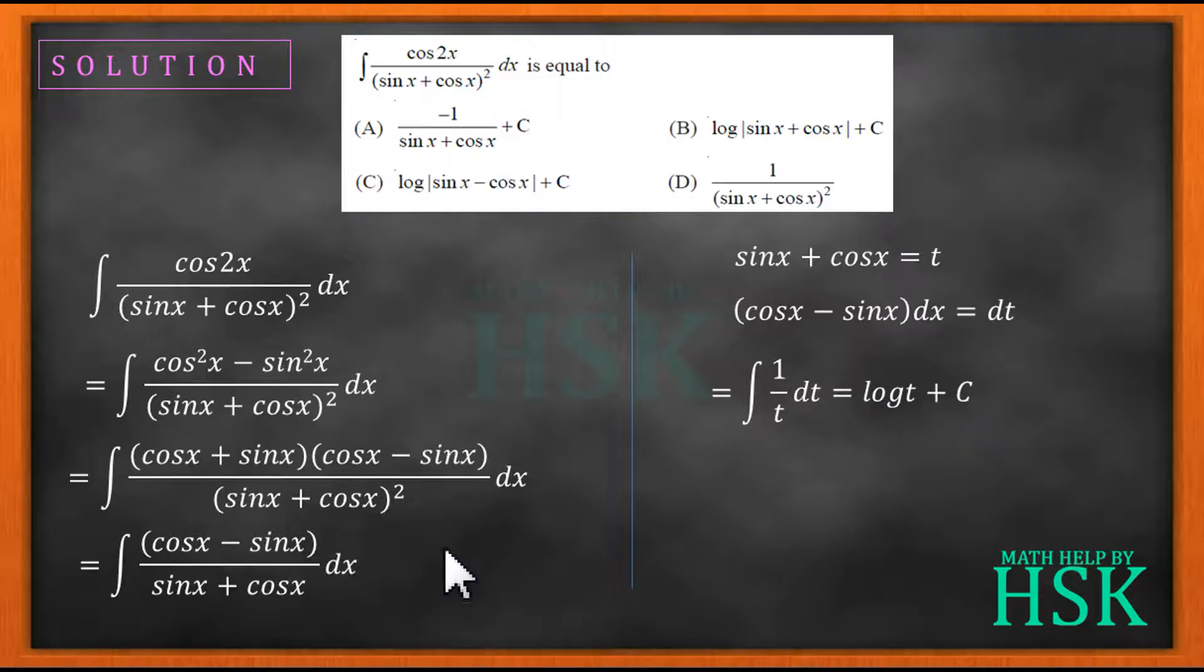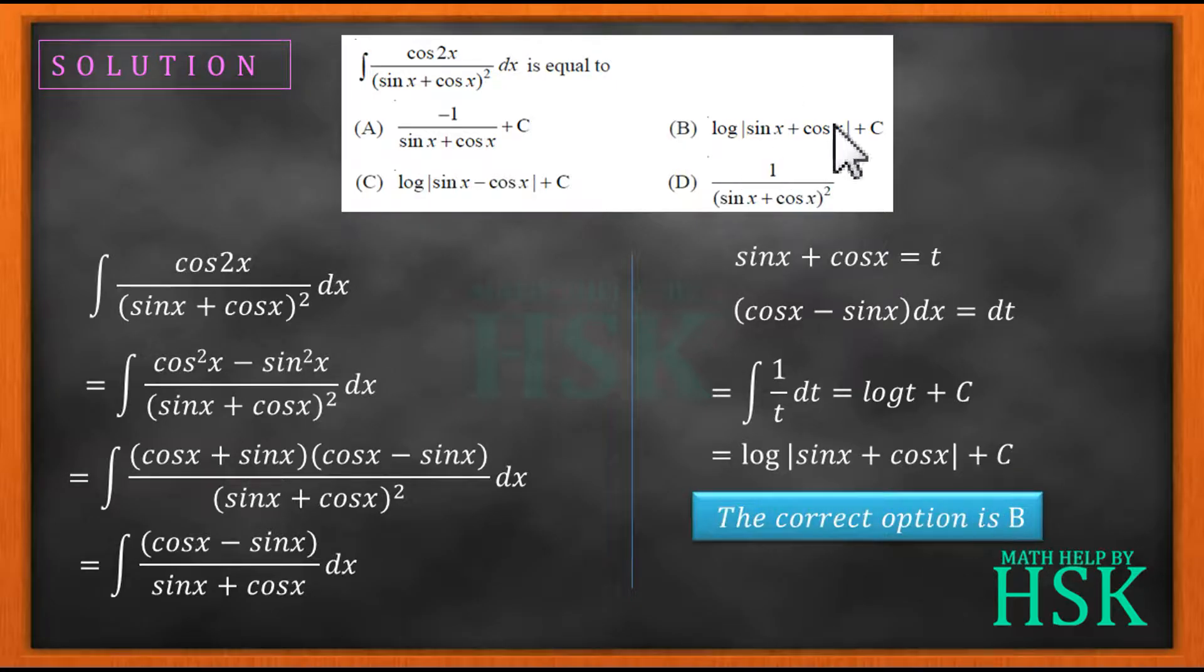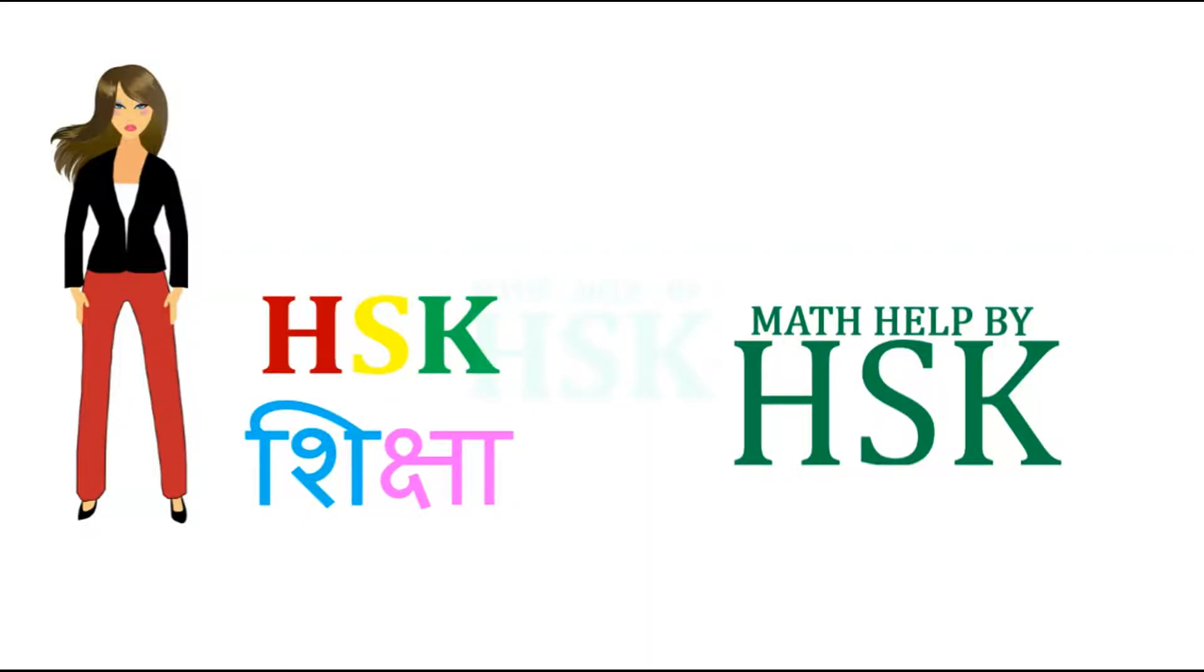Since I have assumed sine x plus cos x equal to t, placing the value of t here I'm going to get the value of this integral as equal to log of sine x plus cos x plus c. That is option b, so the correct option is b. This is my required answer.